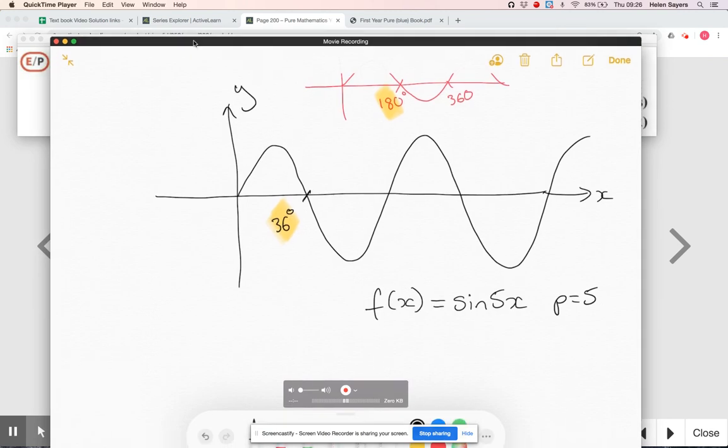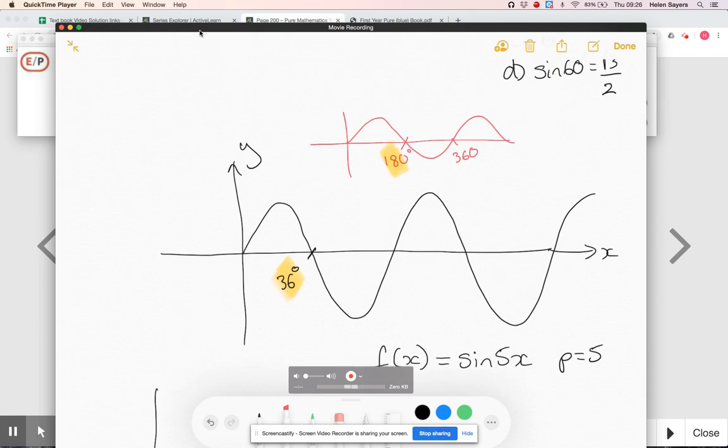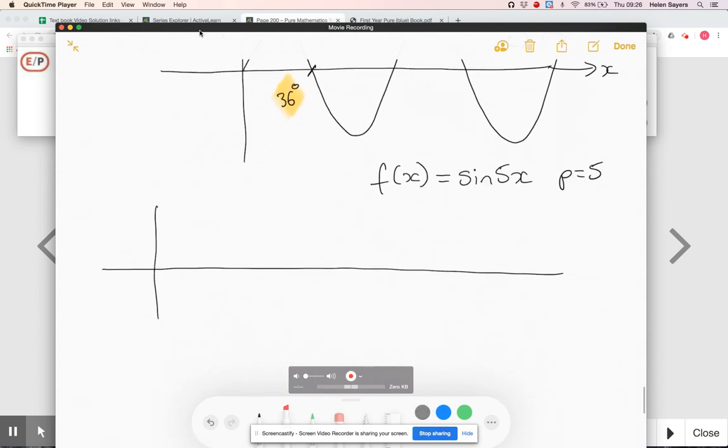I think I'm going to have to start again for my sketch now to get the whole thing on, because basically, if p is five, normally between zero and 360 I would have one full cycle of the curve, so I need to fit in five. I'm going to sketch the curve before I start trying to label the intercepts.